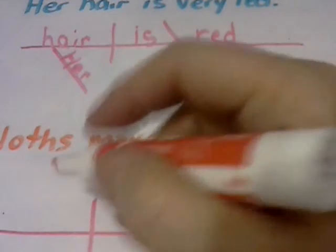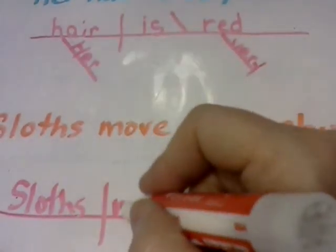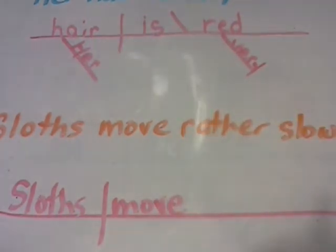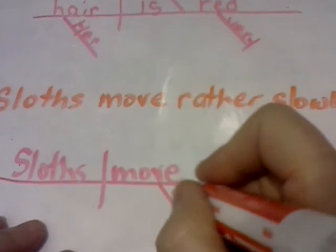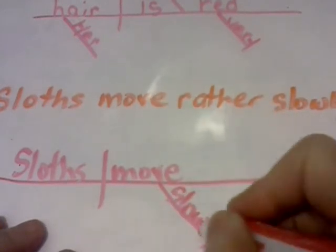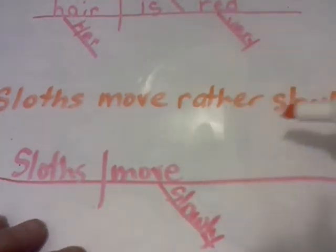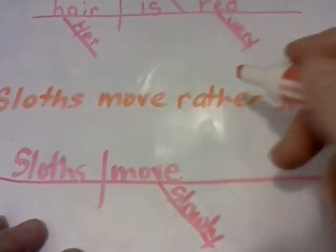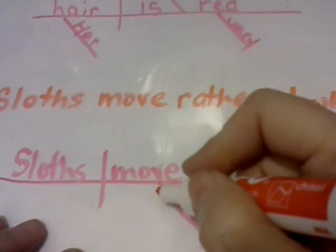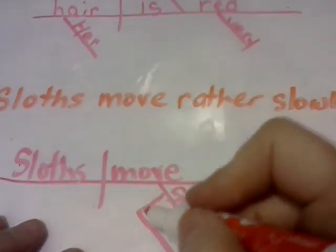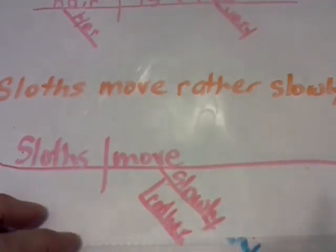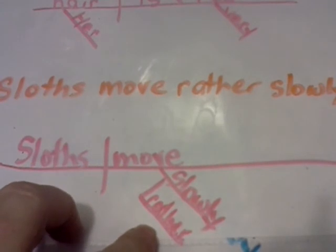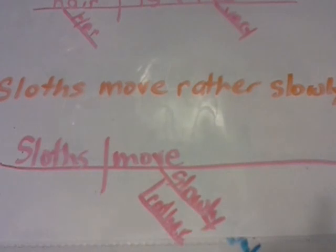One more example: 'Sloths move rather slowly.' The subject is 'sloth,' the verb is 'move,' and 'slowly' tells how they move. 'Rather' tells to what extent. When an adverb modifies another adverb, you draw a little L-shape on the diagram and write the adverb there — words like extremely, rather, very — anything that tells to what extent something is.